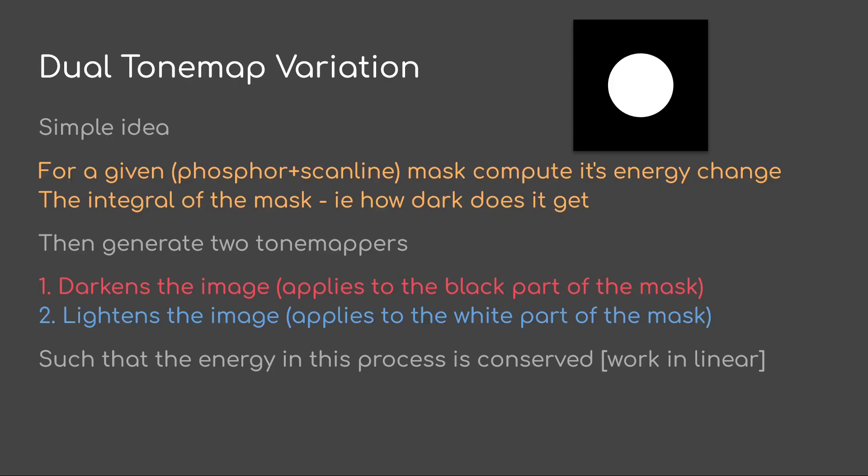I call this algorithm the Dual Tone Map Variation. It's a simple idea. For a given phosphor and scanline mask, first compute the energy change, i.e. the integral of the mask. How dark does it put the screen at?